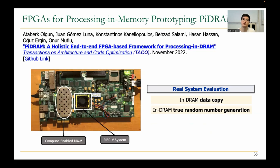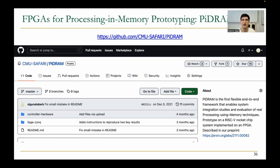We also used FPGAs to prototype processing-in-memory systems. Here's a picture of our prototype where we performed in-DRAM data copy operations and in-DRAM true random number generation along with a real system. Every resource for this work is open-sourced at this link.